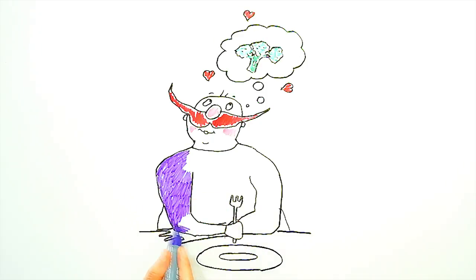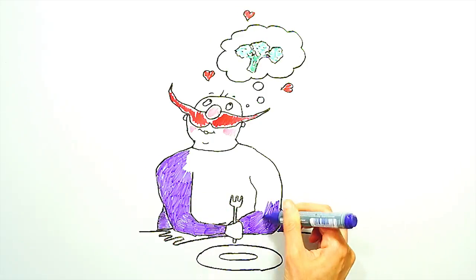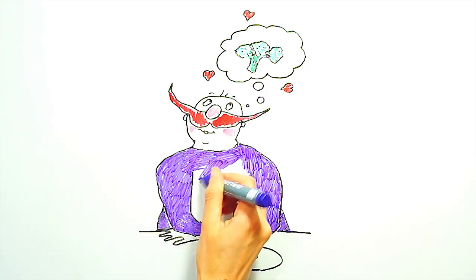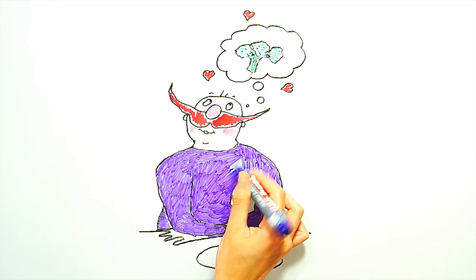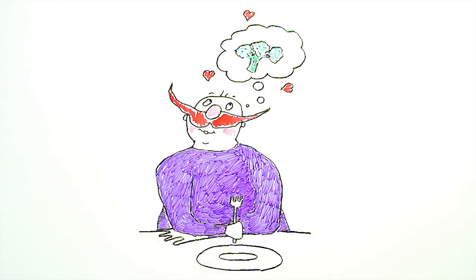If we evolved to crave the things that were good for us then we'd live in a disease-free world, but instead we crave fats and sugars which make us extremely ill, and this makes no sense. Why did we evolve to love the things that are bad for us?